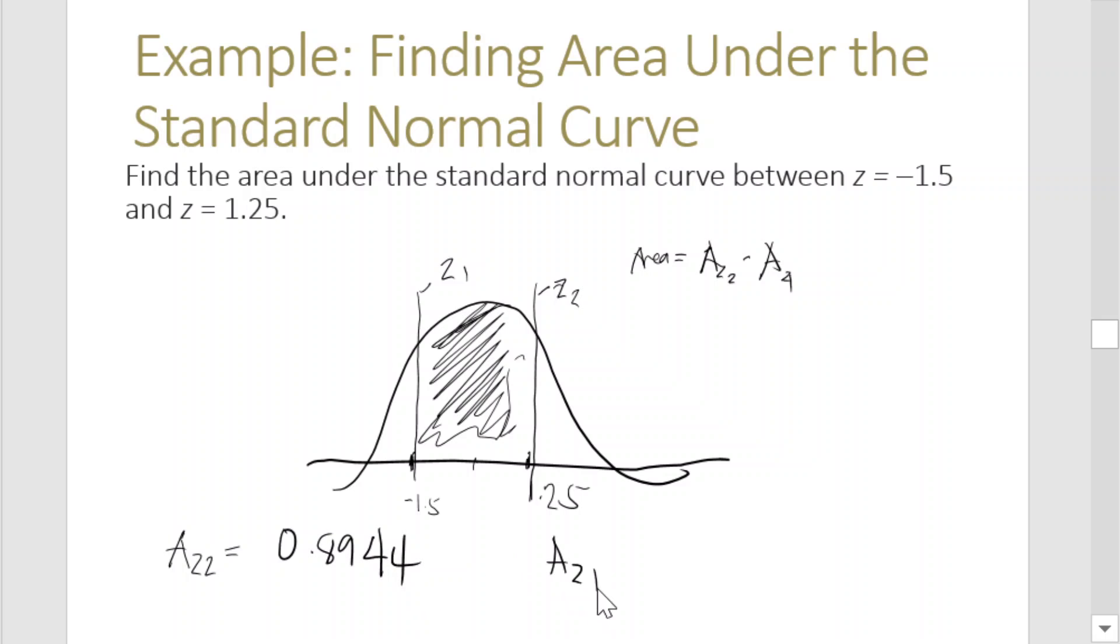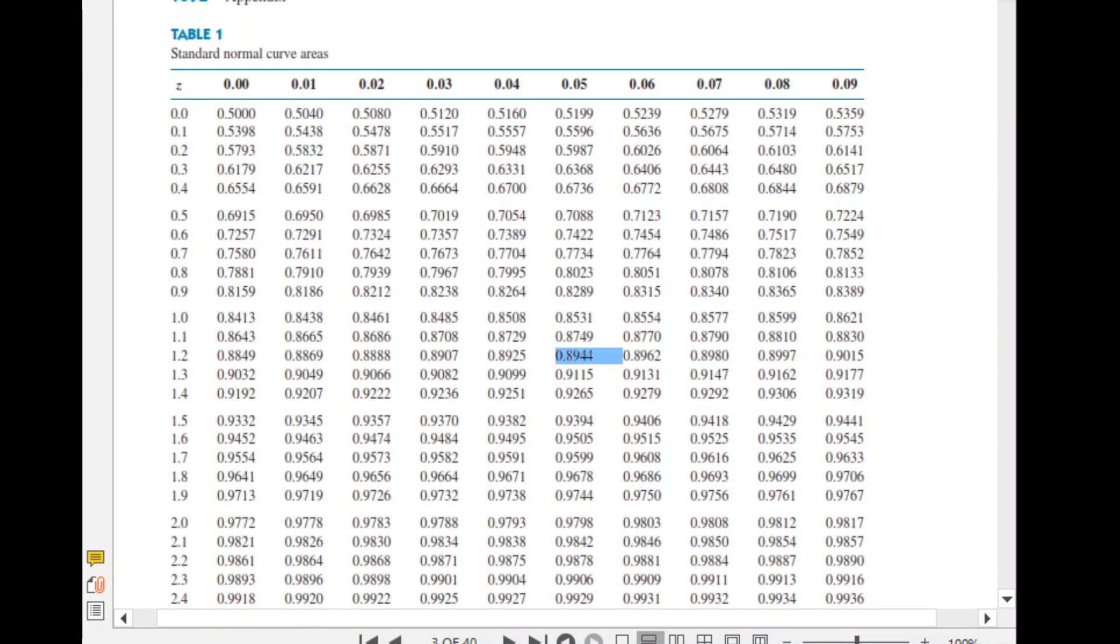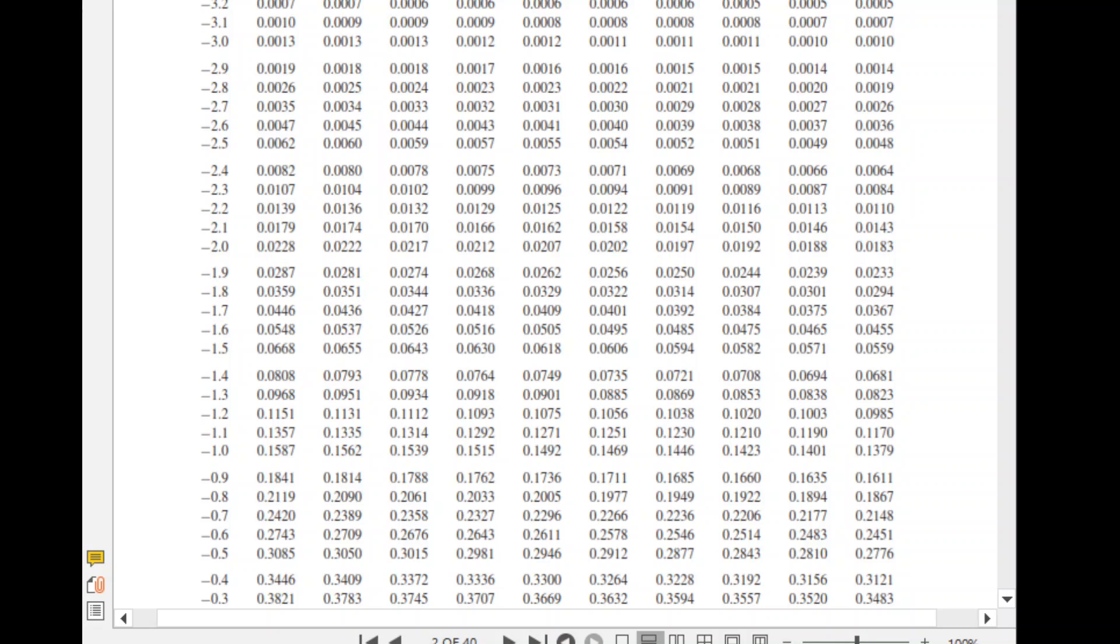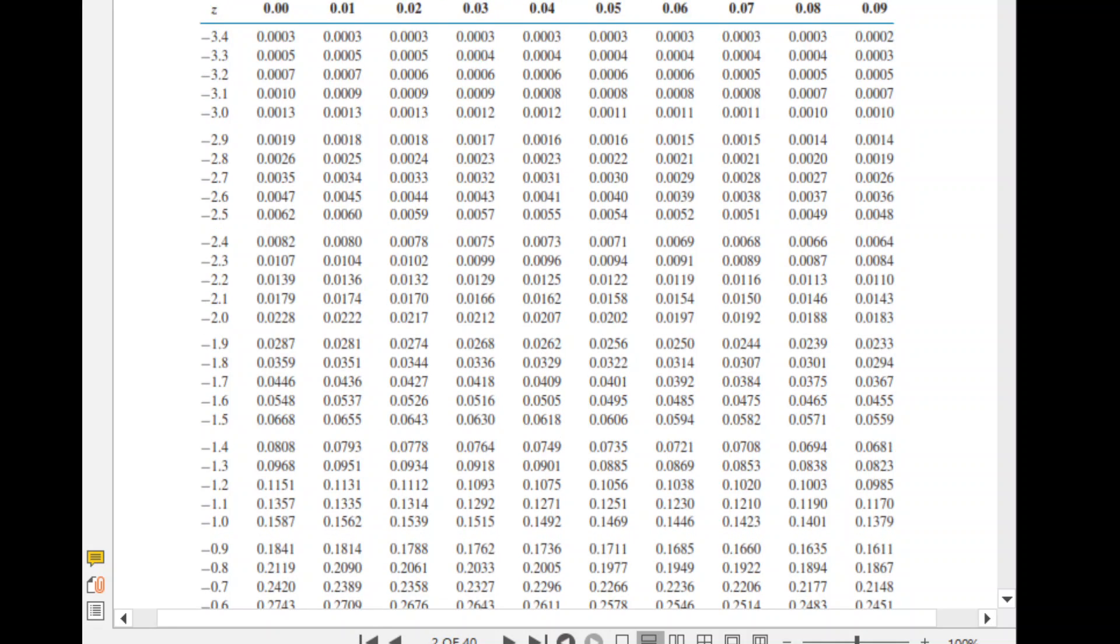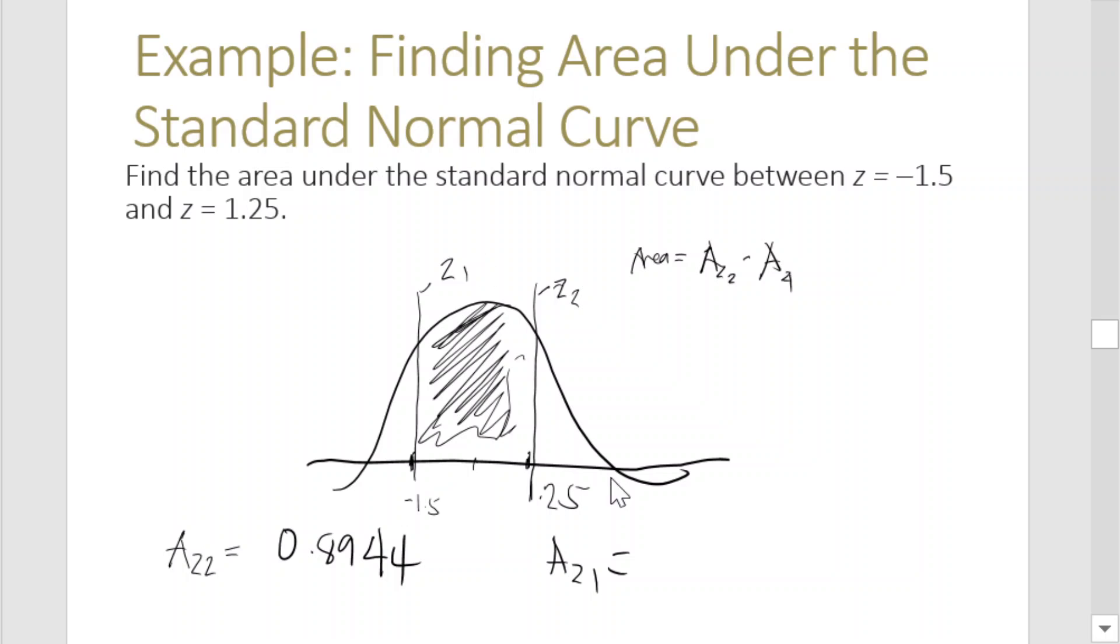Now get the area of z1. z1 is negative 1.5. So go to the negative table: negative 1.5 exactly, which is 0.0668.